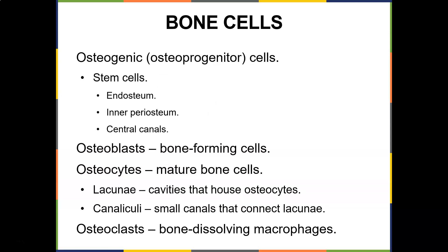Now let's talk about bone cells. The first type is osteogenic cells, which are stem cells found in the endosteum, the inner layer of the periosteum, and within the central canals. Osteogenic cells can multiply continually and give rise to osteoblasts — so osteogenic stem cells give rise to osteoblasts.